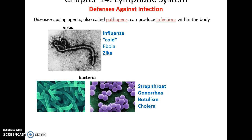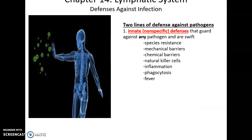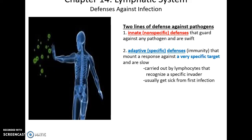Defense against infection involves various pathogens, including viruses such as influenza, cold viruses, Ebola, and Zika virus; bacteria causing strep throat, gonorrhea, botulism, and cholera; protozoans causing malaria, sleeping sickness, and giardia; and parasitic worms such as tapeworms and heartworms. We have two main lines of defense: innate defenses, which are nonspecific and guard against any pathogen via species resistance, mechanical barriers, chemical barriers, natural killer cells, inflammation, phagocytosis, and fever; and adaptive defenses, which target one specific pathogen, involve a slower response that must be built up, and primarily involve lymphocytes.